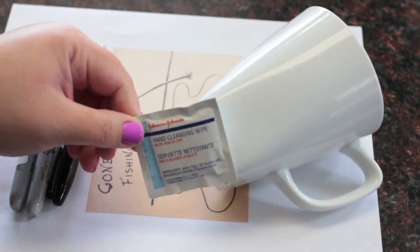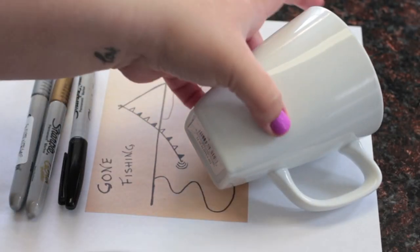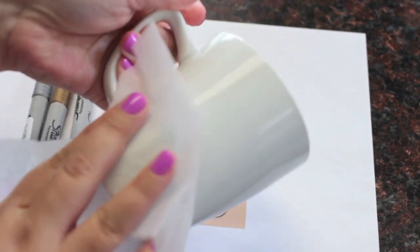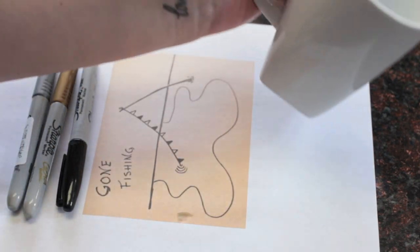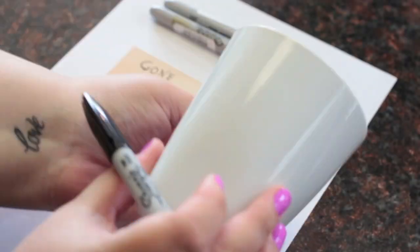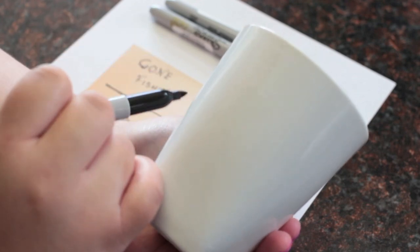Then wipe down your mug with an alcohol pad or wipe to get any kind of dirt or oil off the mug. Pick out something to draw and draw it on the mug with your marker.